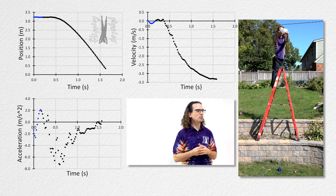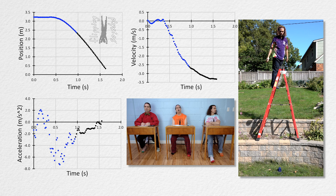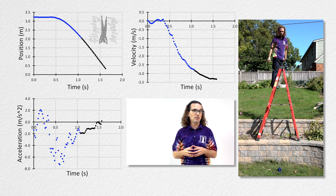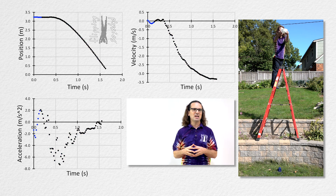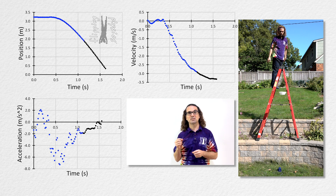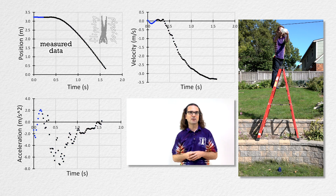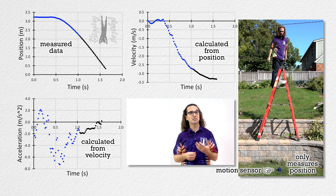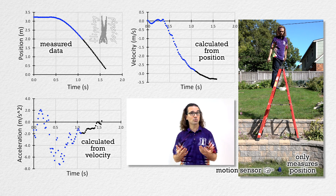Looking at the acceleration as a function of time graph: the acceleration should be zero while holding the coffee filters, then jump to negative 9.81 meters per second squared when dropped, and then increase from there to zero — but that is hard to see clearly here because of noise. The only data actually collected was position as a function of time. A motion sensor detected position 50 times per second; velocity was calculated from position data, and acceleration from velocity data. With each calculation there is more noise, which is why position data looks great, velocity looks okay, and acceleration looks pretty scattered.